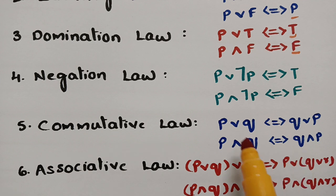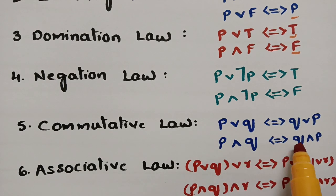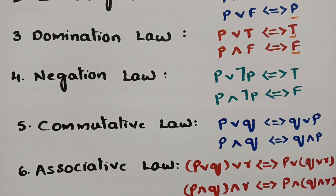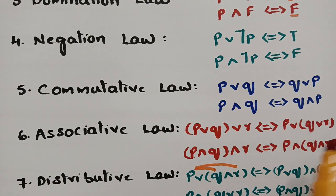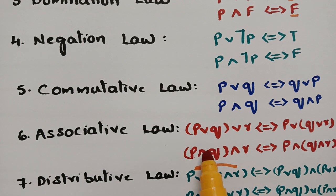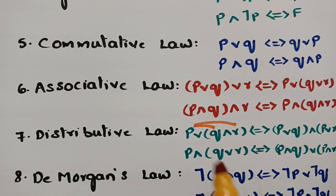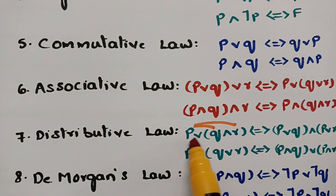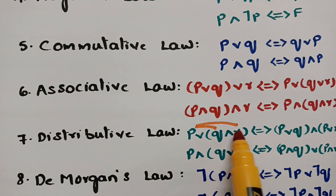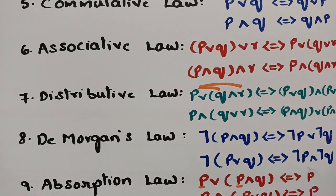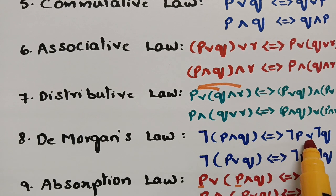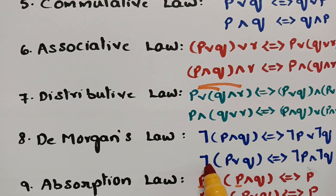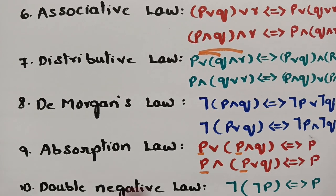Commutative law: a times b equals b times a, or a plus b equals b plus a — same with conjunction and disjunction. Associative law: a times (b times c) equals (a times b) times c — also straightforward with conjunction or disjunction. Distributive law: p is distributed to q and r — p OR (q AND r) equals (p OR q) AND (p OR r). De Morgan's law: sending negation inside changes conjunction to disjunction — negation p OR negation q — or changes disjunction to conjunction — negation p AND negation q.